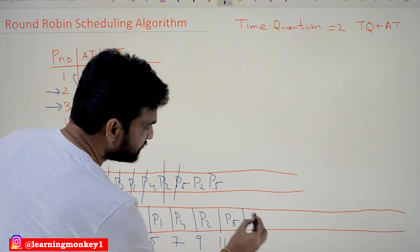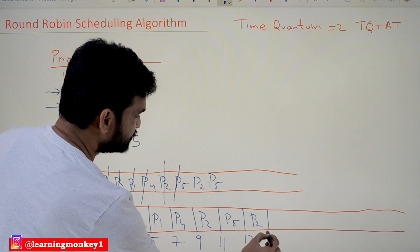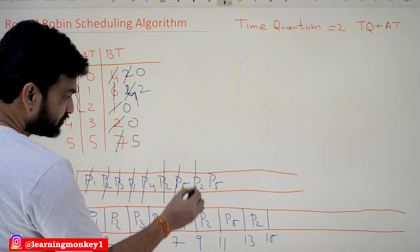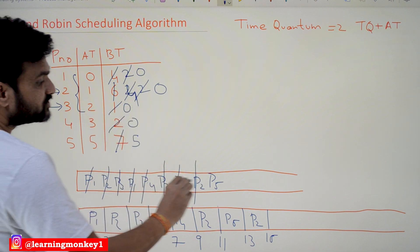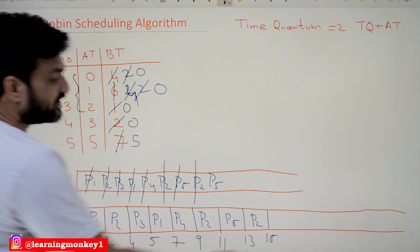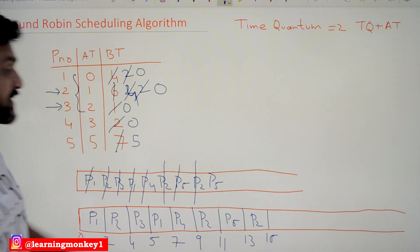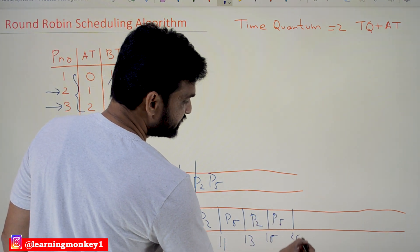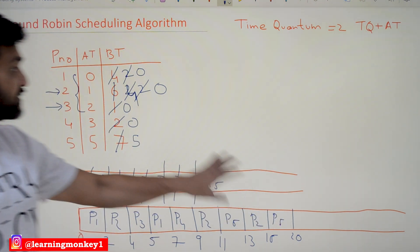P5 is next and runs for two units of time from t=11 to t=13, with five units remaining, so it is put back into the queue. Then P2 is switched to the running state, running from t=13 to t=15. P2's execution is completely done — no need to put it back. Now only P5 remains. P5 takes all its remaining time, finishing at t=20. By t=20, all processes have completed execution.